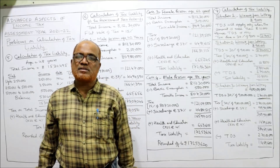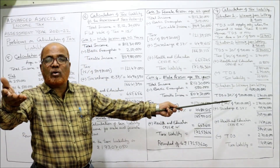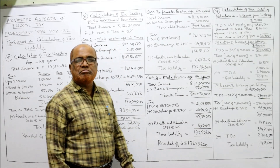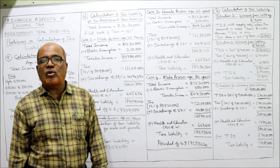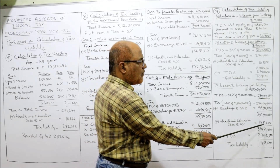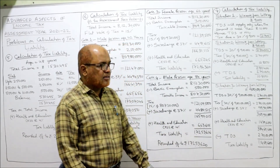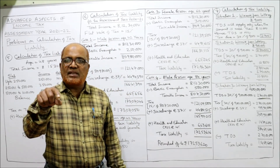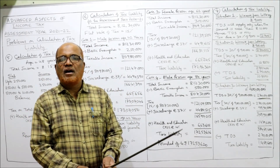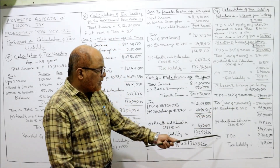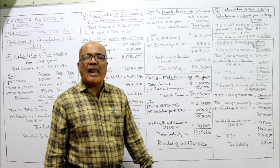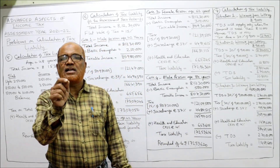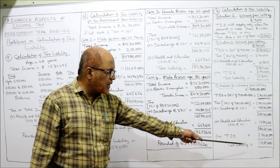Surcharge is thirty-seven percent since income of nine crore is more than five crore. Thirty-seven percent of two crore seventy lakh gives 99,90,000 as surcharge. Add health and education cess four percent: four percent gives 14,79,600. Total tax comes to three crore eighty-four lakh sixty-nine thousand six hundred. From this deduct TDS of two crore seventy lakh already deducted. Remaining balance tax due is one crore fourteen lakh sixty-nine thousand six hundred — that is the amount the SSC has to pay.